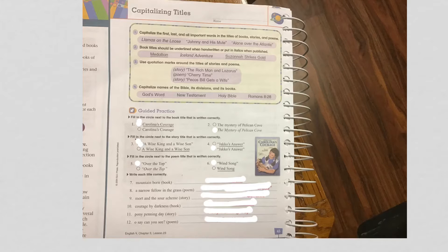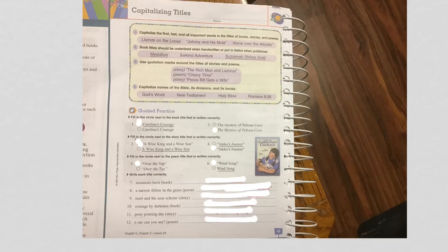So today we are doing where we capitalize titles — titles of books and poems. And that's what we're going to be doing today. So you need your workbook, page 45. We're going to do it together, and then page 46 you're going to do on your own and then turn in, and that's it for today.